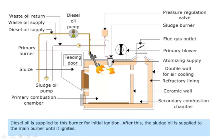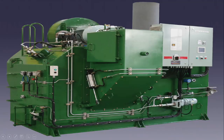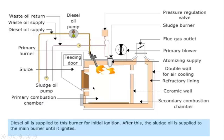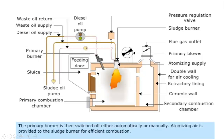First, what will happen? The diesel oil will be supplied from the diesel oil pump to the primary combustion chamber. It will get ignited and will start to maintain a temperature of around 500 degrees Celsius. Once the combustion temperature inside has reached around 500 degrees Celsius, the sludge will start to come and it will get self-ignited, maintaining a temperature above 850 degrees Celsius — continuing to maintain around 850 to 1200 degrees Celsius. After sufficient temperature is maintained, the diesel oil supply will be stopped and the sludge oil which is supplied will now continue firing.